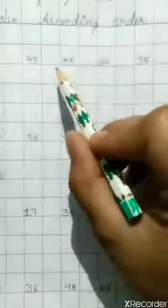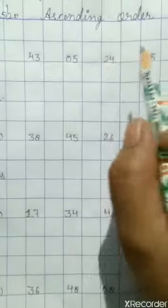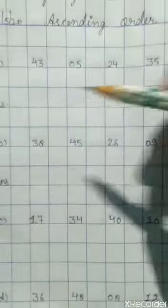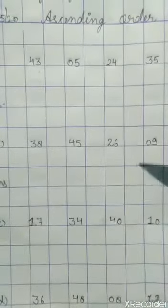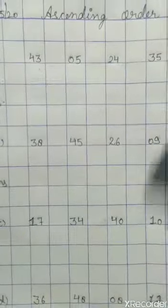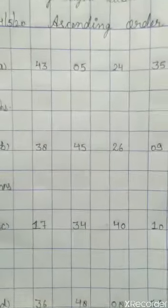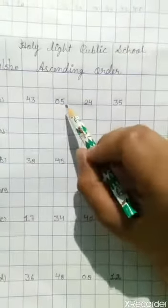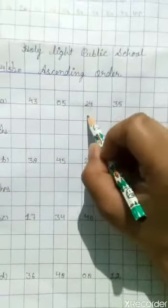अब इसको हम कैसे क्रम में लिखे हैं, वहां हमने सिर्फ 1, 2, 3 के बारे में पढ़ा। अब यहां पर हमारी कुछ जो काउंटिंग है वह 50 तक की है तो इस बीच में आपको बताना है कि कौन सा सबसे छोटा है। कौन सी लाइन जो 1 की है वह सबसे छोटी है, उसके बाद जो 11 वाली लाइन आती है वह से बड़ी होती है। So first we show the small line and the main line begins.